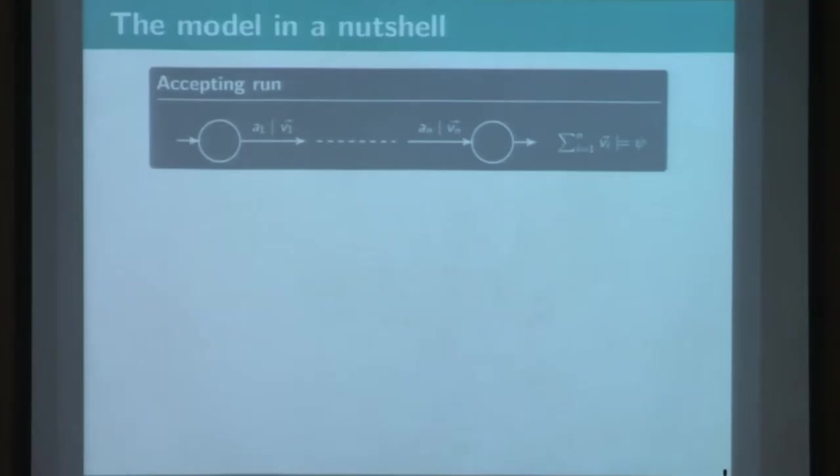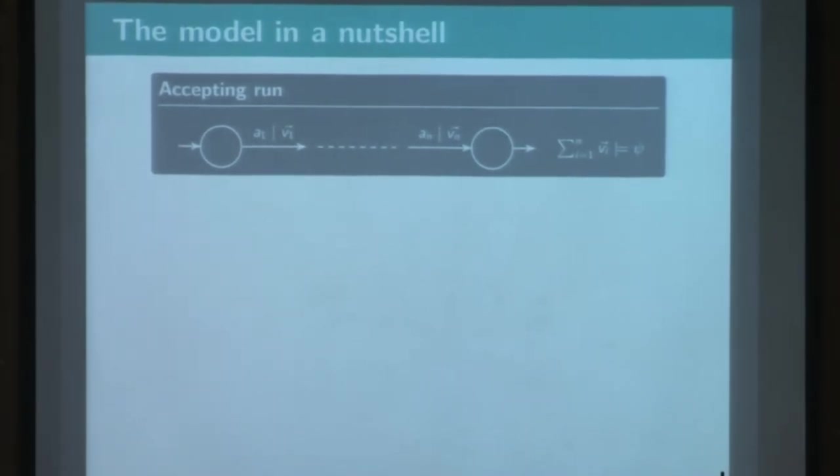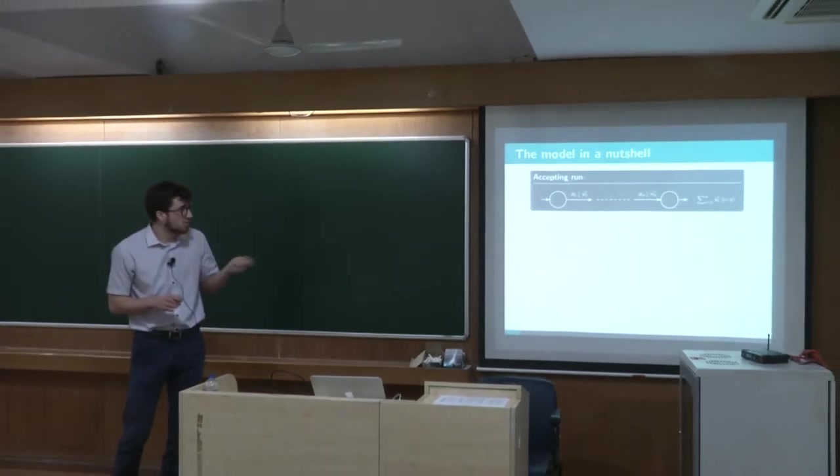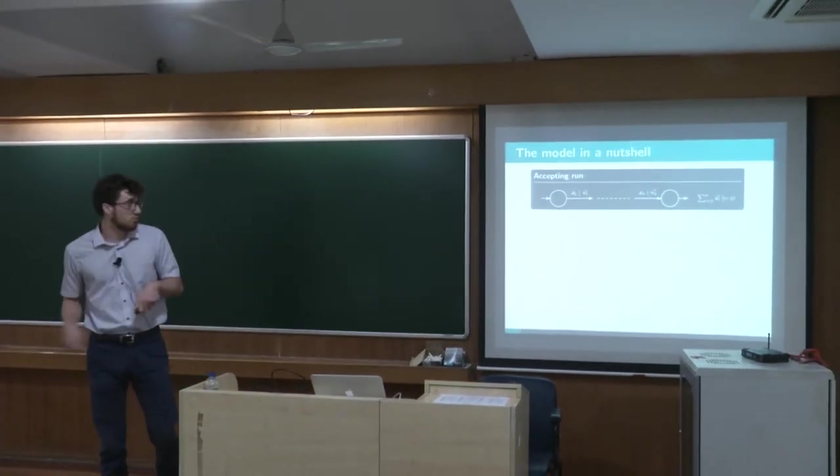And I will just introduce this Parikh Automata model first. So this model basically extends the definition of NFA in the sense that now transitions are labeled by vectors, vectors of integers, and a run is then associated to a value which corresponds to the member-wise sum of the visited weights along this run.